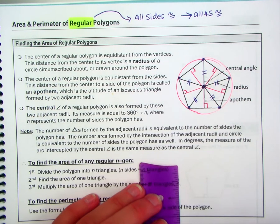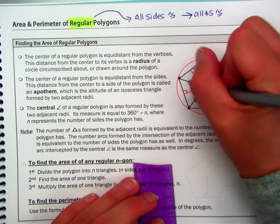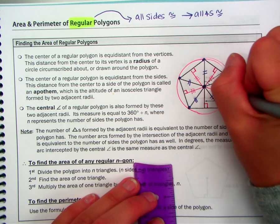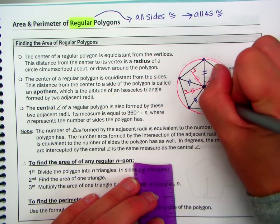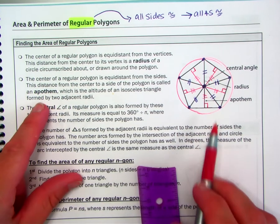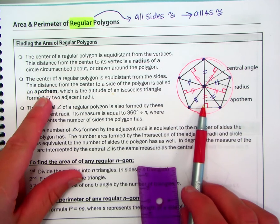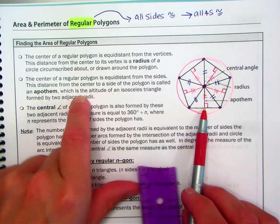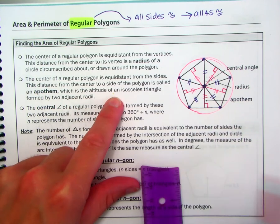And then this one is already drawn. So let's note that they're all congruent, say, with three lines. This distance is called an apothem of the polygon.